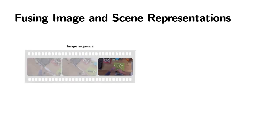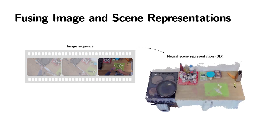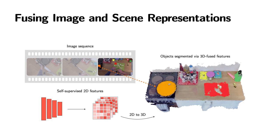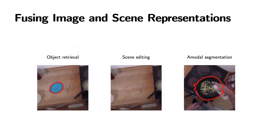We consider integrating the knowledge from a self-supervised feature extractor into scene representations as follows. First, we represent the 3D scene from a collection of images by modelling it with neural radiance fields. Additionally, we extract features from each image with a self-supervised model such as DINO, and fuse them with the geometry of the scene through the task of 3D reconstruction. This enables us to operate with 2D semantic features on a scene level. For example, given the features of a patch in an input image, we can segment the object corresponding to these features in 3D, as shown in this point cloud. The fusion of semantic features into the neural scene representation enables further applications such as object retrieval, scene editing, and amodal segmentation.